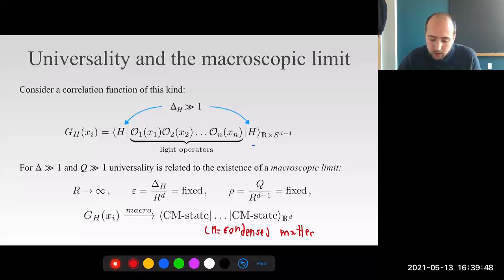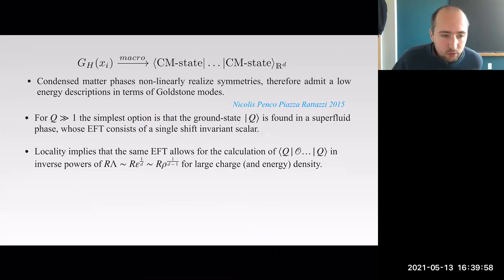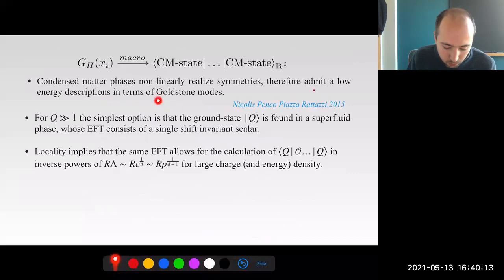This is important because condensed matter states must realize nonlinearly the spacetime and internal symmetries of the theory—particularly the conformal group and possibly the internal symmetry. Therefore they generically admit some low-energy description in terms of Goldstone modes, justifying again why there is universality. For large charge with a U(1) symmetry, the simplest option is that the ground state is found in a superfluid phase whose EFT consists of a single shift-invariant scalar.